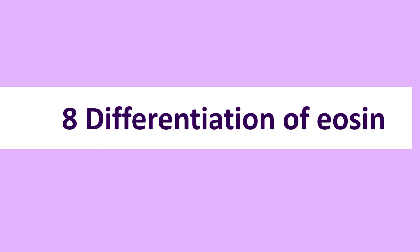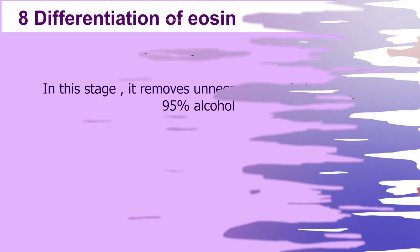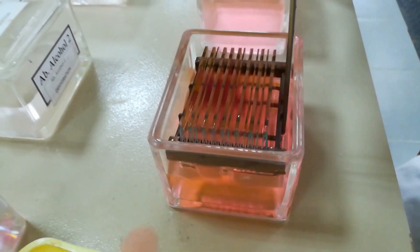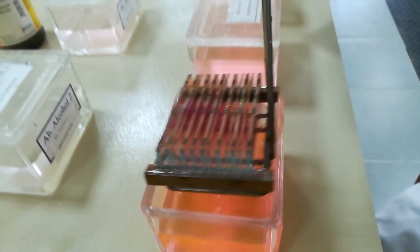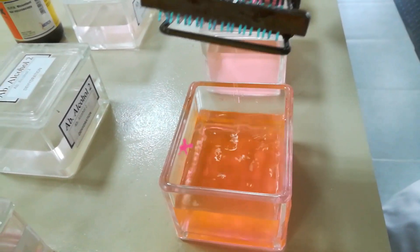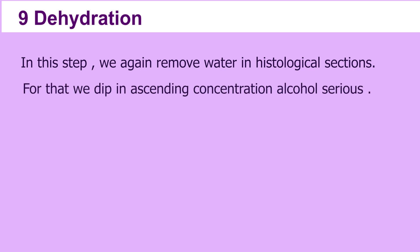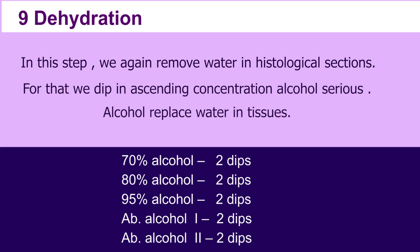Differentiation of Eosin: in this stage, it removes unnecessary Eosin by using 95 percent alcohol. Two quick dips in 95 percent alcohol is enough. Dehydration: in this step we again remove water in histological sections. For that, we dip in ascending concentration alcohol series — alcohol replaces water in tissues. 70 percent alcohol two dips, 80 percent alcohol two dips, 95 percent alcohol two dips, absolute alcohol one two dips, absolute alcohol two two dips.